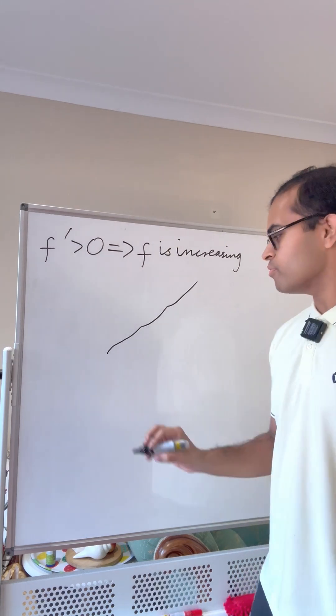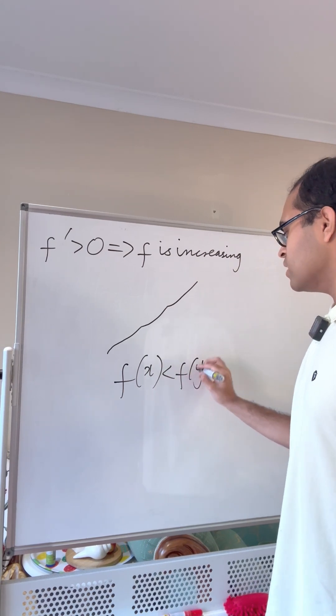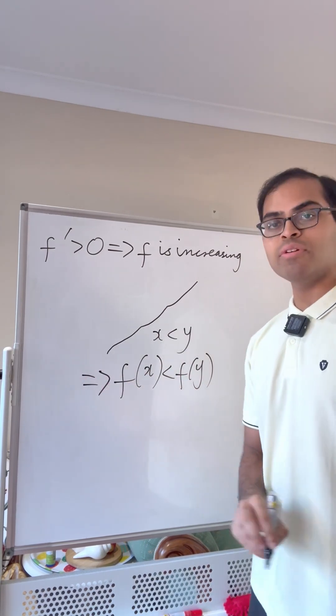So here's a rigorous proof. We want to show that f of x is going to be less than f of y if x is less than y. That's what we want to prove.